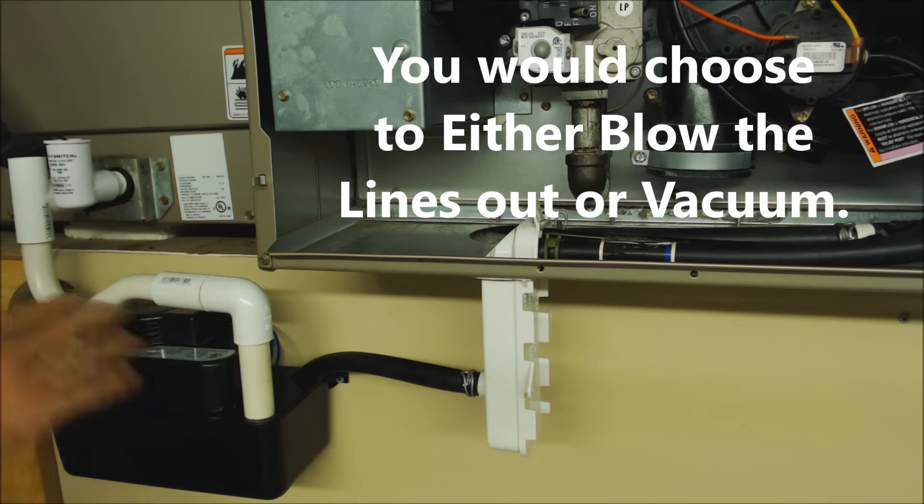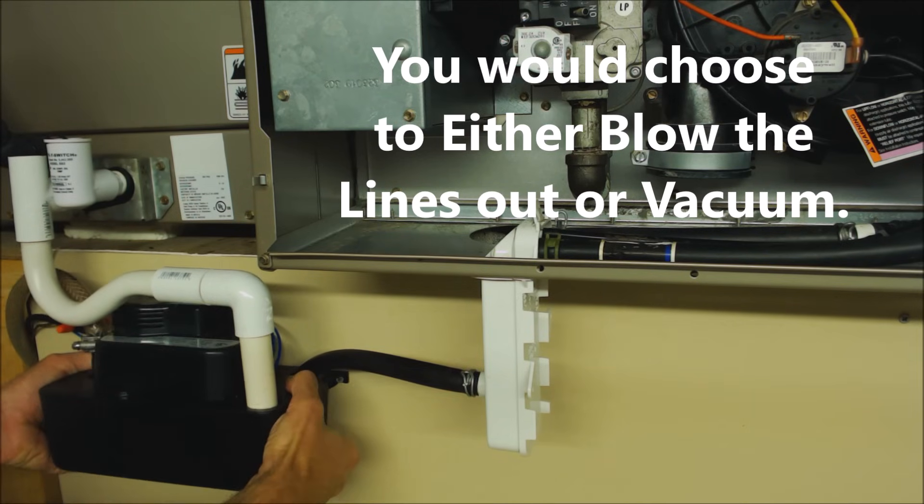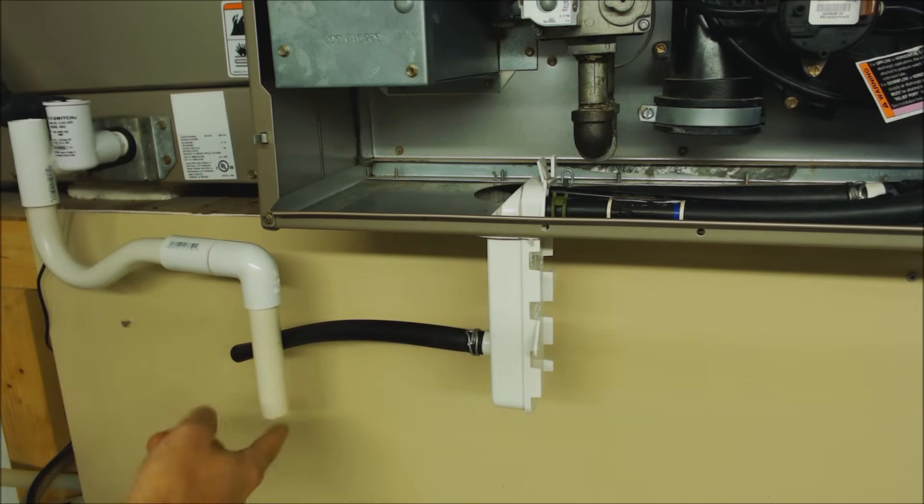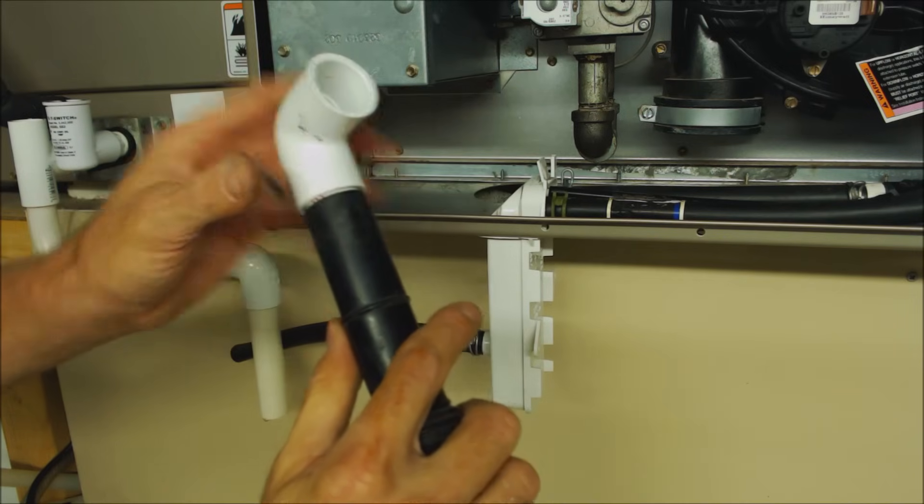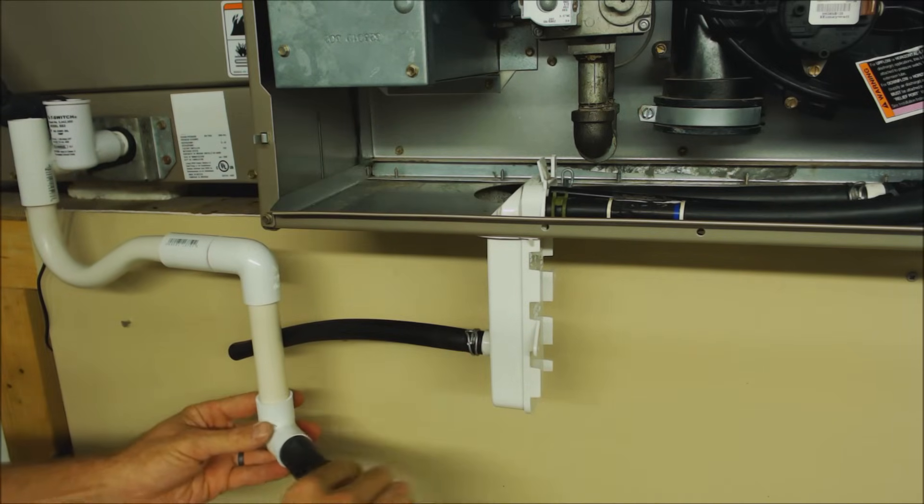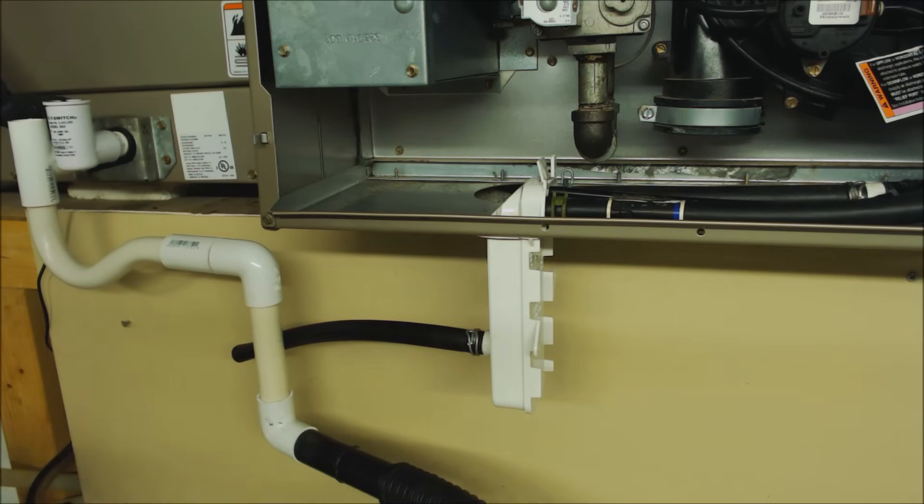Now if we're going to vacuum this trap out we need to go ahead and move this condensate pump down. Now in order to connect to this it's very simple, we just have a piece of 3/4 PVC and our 90 right here. And we just go ahead and put it up like this and go ahead and turn our trap back on.